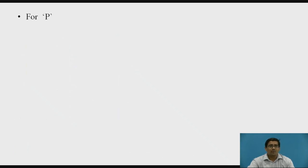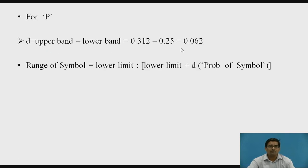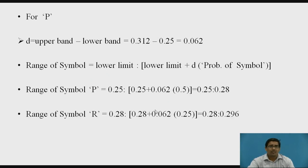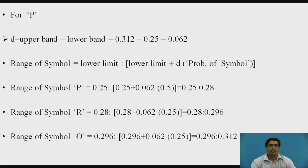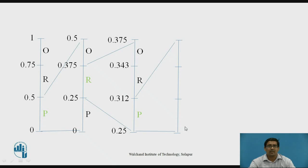Further, we again divide for P, because in our question the message is P, R, P, O, and the third character is again P. D = upper band minus lower band = 0.062. Putting the values into the range of symbol formula, the range of P is 0.25 to 0.28, the range of R is 0.28 to 0.296, and the range of O is 0.296 to 0.312.